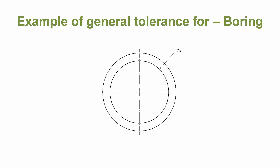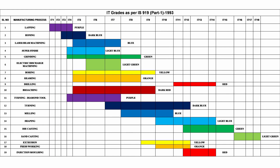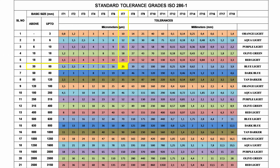Example of general tolerance for boring. Given a part for the boring process, the IT grade is serial number 7, shown in yellow color — we require an average manufacturing process, which is IT7. Dimension 40 is the basic size, which falls between 30 to 50 mm. The IT grade is IT7. From the chart, the tolerance value is 25 microns, which is 0.025 mm. Divided by 2, that is 0.0125 mm tolerance per side.